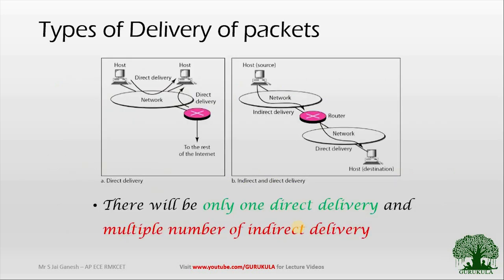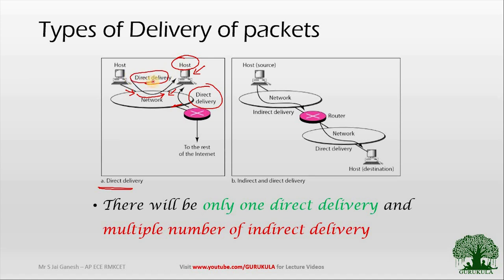These two figures clarify what indirect delivery and direct delivery are. Looking at this figure, it depicts direct delivery. The packet is being sent from a host connected to a particular network to another host also connected to the same network. If packet delivery happens from one host to another host within a network, we call that direct delivery. Also, if the packet is coming from outside but this particular router is connected to the same network, and the destination host receives the packet from a device on the same network, we call that direct delivery as well.